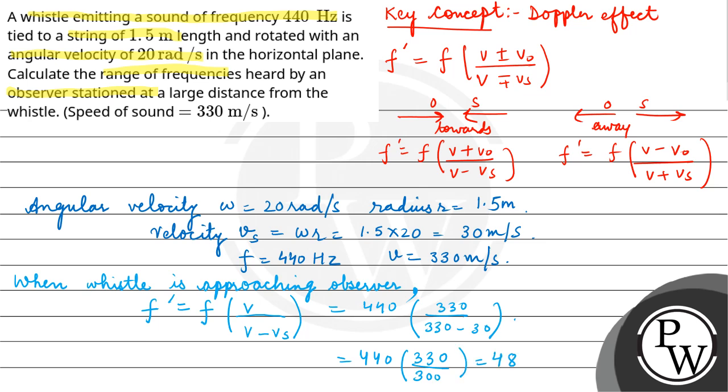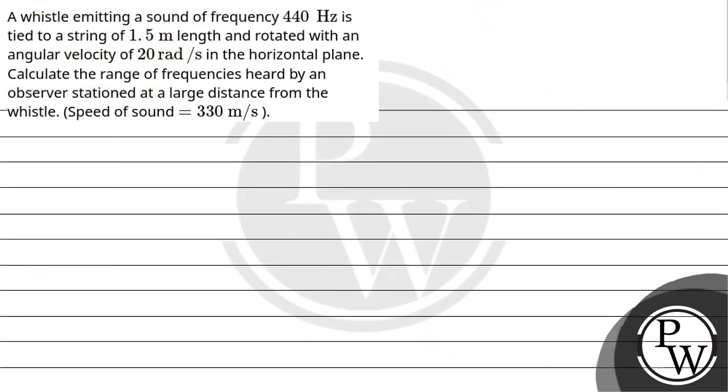Now when whistle is moving away from the observer, at that time our frequency will be f'. Now observer is at rest, so V₀ is 0, divided by V. When it moves away, we add plus.